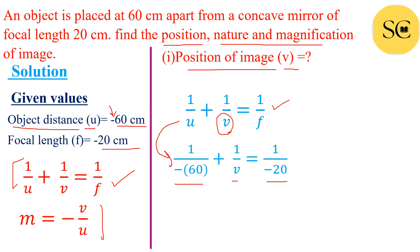Now we will transfer this value here. Now we can write 1 upon v is equal to 1 upon minus 20 minus 1 upon 60. Take the LCM 60 and we will get these values minus 3 plus 1. 1 upon v is equal to minus 2 upon 60 and we will have to find the value of v.